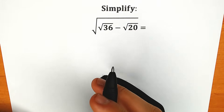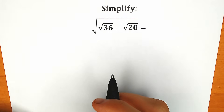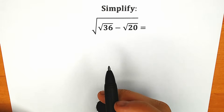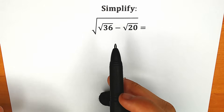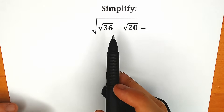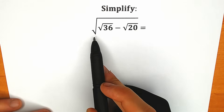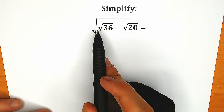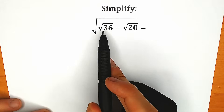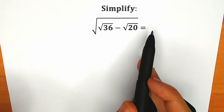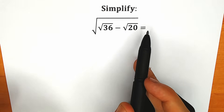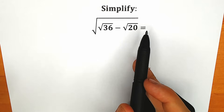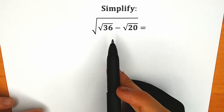Hello everyone! Happy to see you here! Welcome back to my channel Hiya Mathematics! Today we have a very interesting and tricky question from an ancient examination. We have the square root of the square root of 36 minus the square root of 20, and we need to simplify this. If you have your solution or assumption, you can write it in the comments below and then we will check your answer.